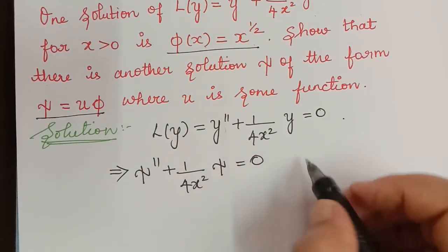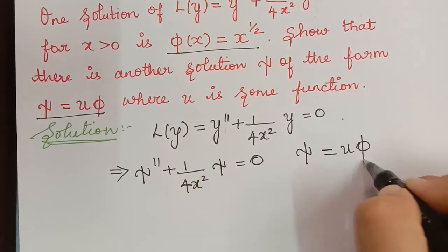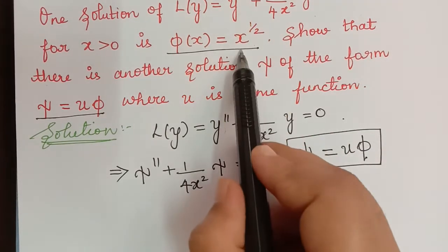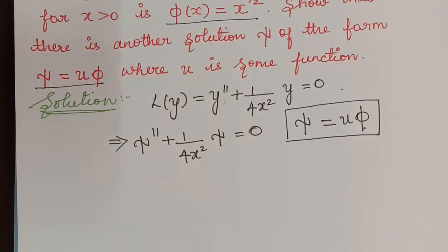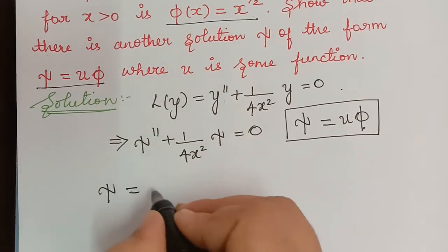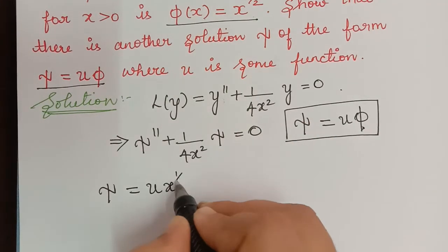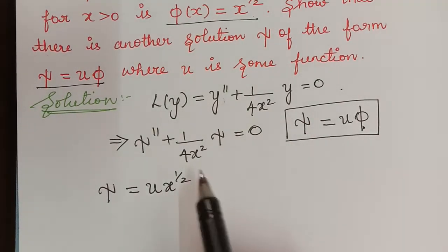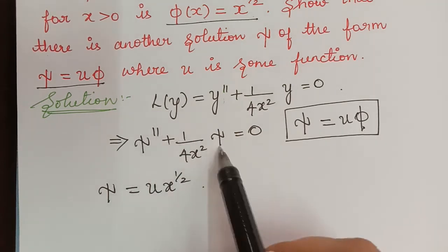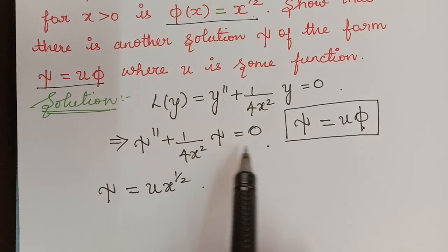Now, ξ is given to be of the form ξ = uφ, where φ = x^(1/2). So ξ = u · x^(1/2). We need to find ξ'' and substitute both ξ'' and ξ into the equation in order to solve for ξ.